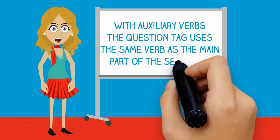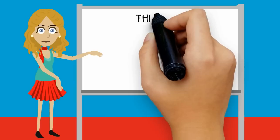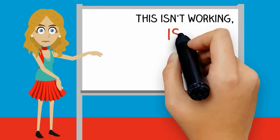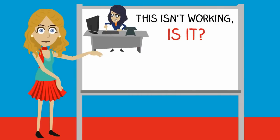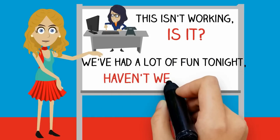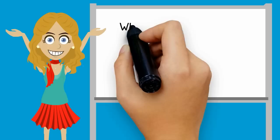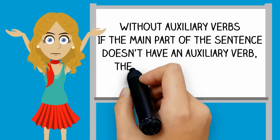With auxiliary verbs, the question tag uses the same verb as the main part of the sentence. This isn't working, is it? We've had a lot of fun tonight, haven't we?